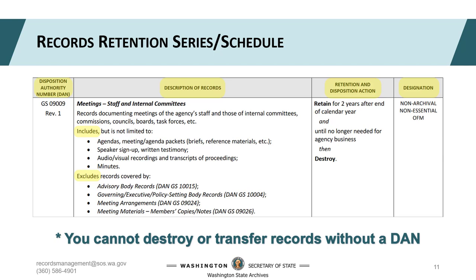Thankfully, record series are functional and not subject or department dependent, so they include as many applicable records as possible. This record series covers records about the agency operating on behalf of itself, placing it in the realm of COR and the state general schedule. The retention and disposition action tells you how long to retain a record, when that countdown starts, and what you do with the record once it has met retention. In this example, you have two countdown triggers — end of calendar year and until no longer needed for agency business — after which the record is retained for two years before being destroyed.